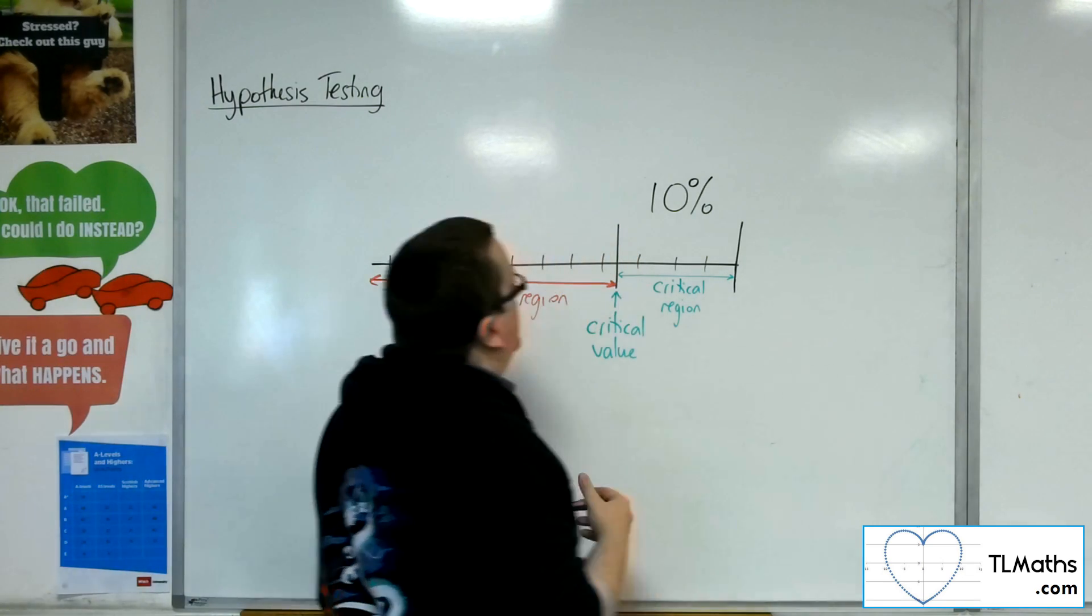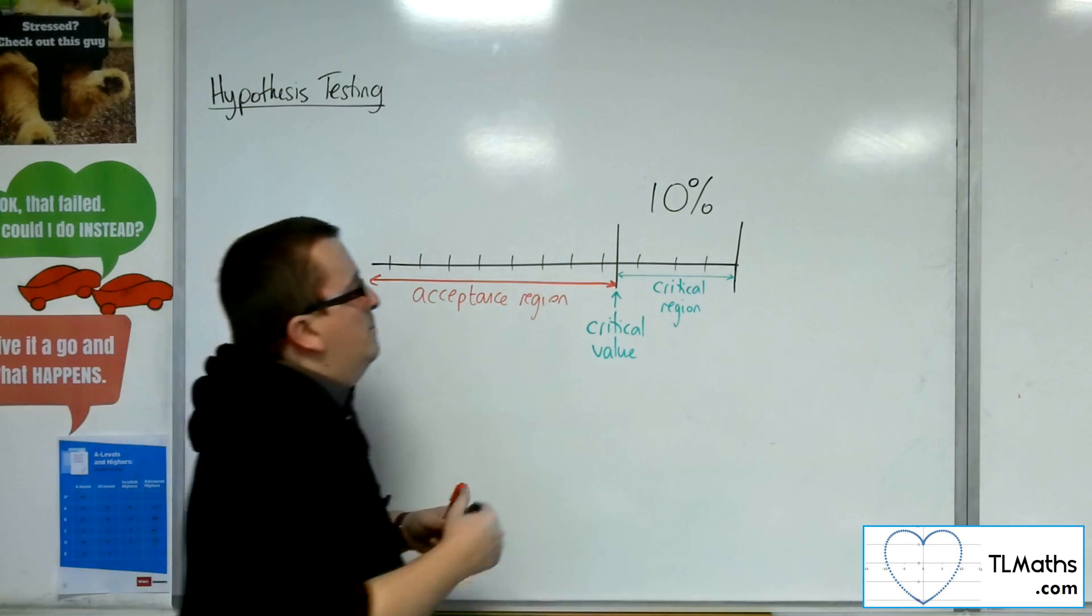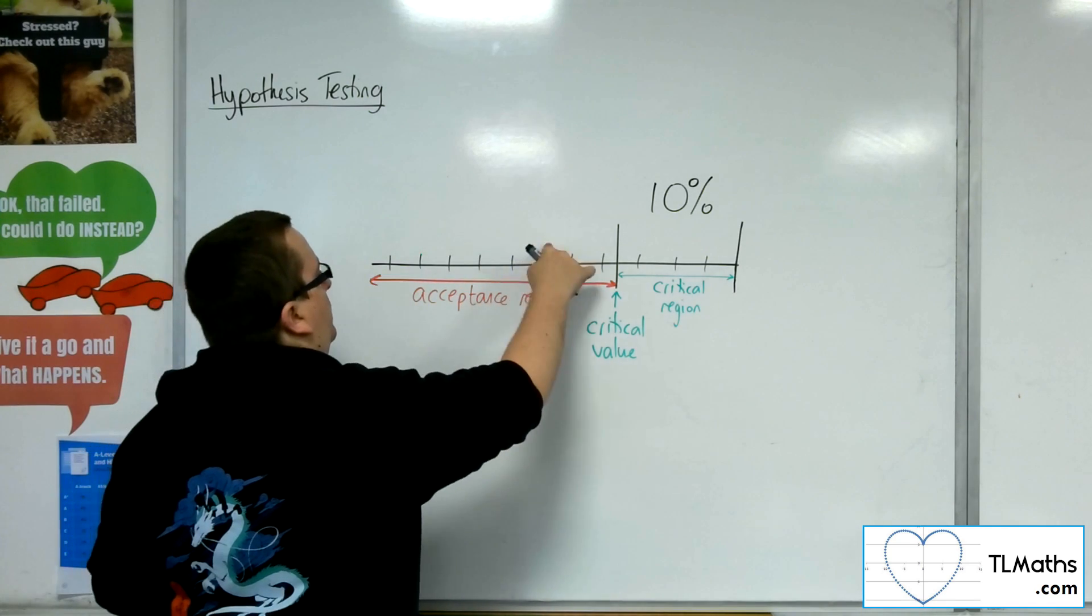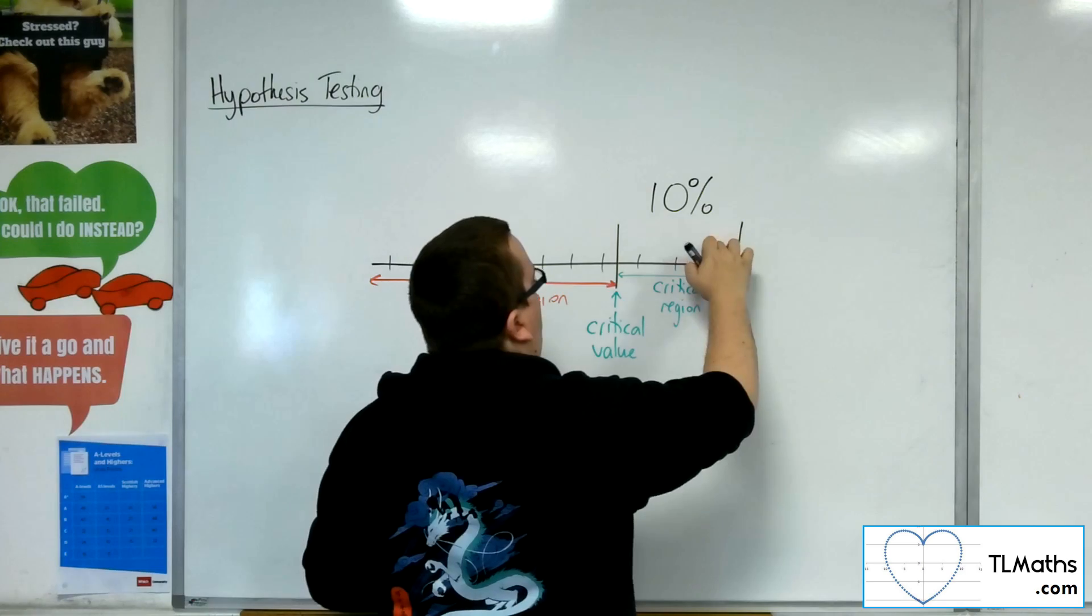And what you then find is that maybe this represents, I don't know what we've got, so 1, 2, 3, 4, 5, 6, 7, 8, 9, 10, and 11.